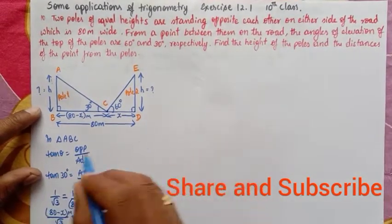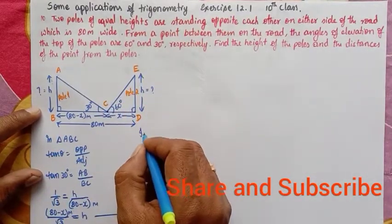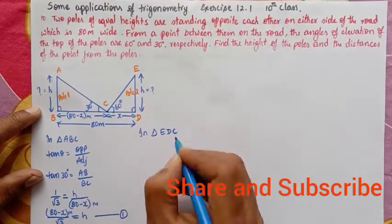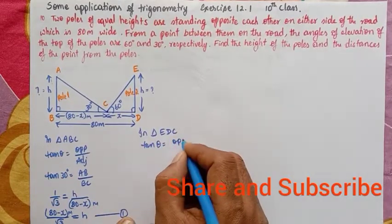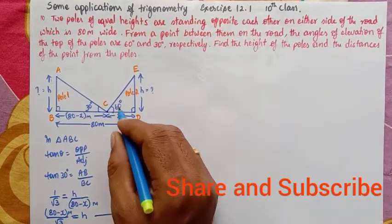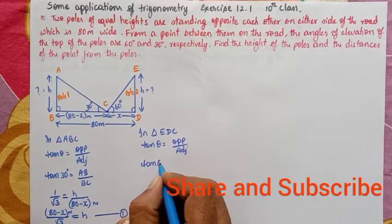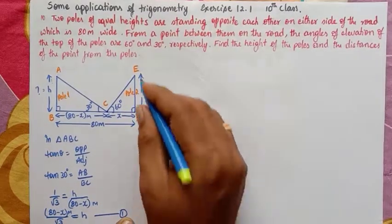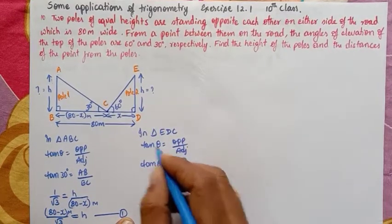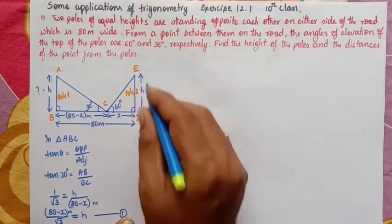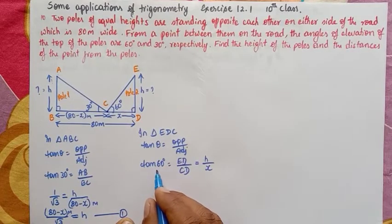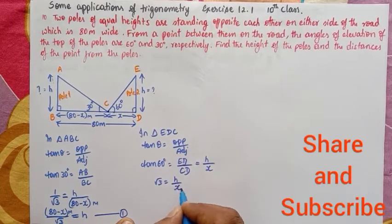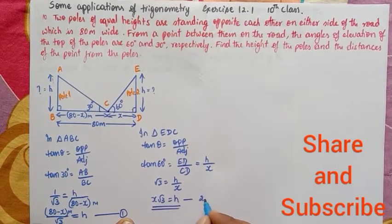Now let me move on to the second triangle. In triangle EDC, using tan θ = opposite by adjacent, here θ is 60 degrees. Tan 60° = ED / CD. ED is h and CD is x. Since tan 60° = √3, we get √3 = h / x, so x√3 = h. Let me call this equation 2.